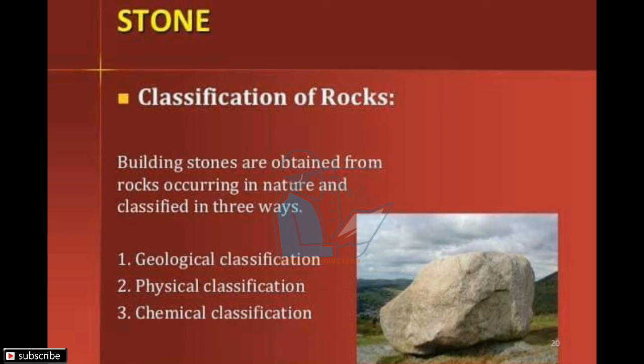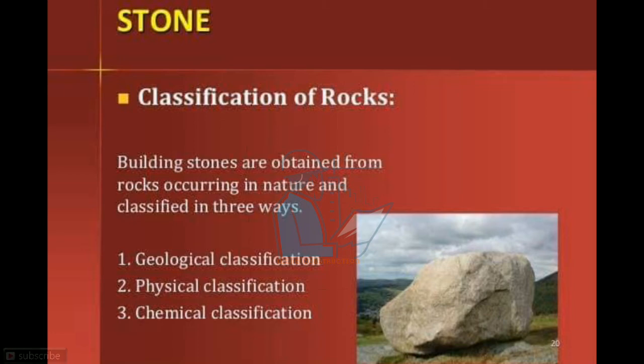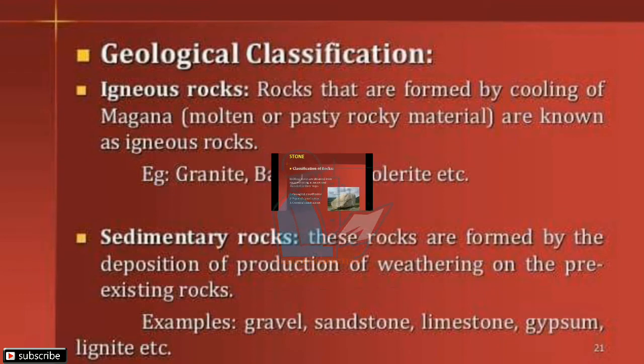Now, stone is used as aggregate or in retaining walls. Building stones are obtained from rocks occurring in nature and are classified in three ways: geological classification, physical classification, and chemical classification.